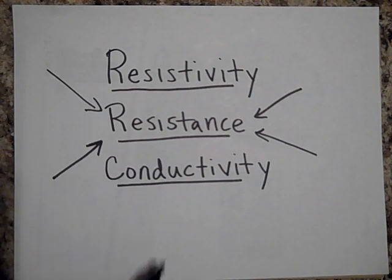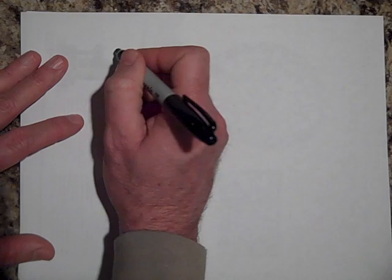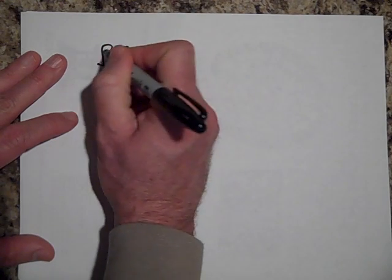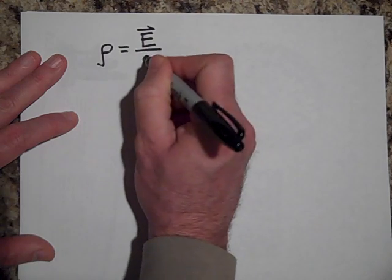Okay, so I want to talk to you about resistance here. You worked with resistance a little bit last year, enough to know that it's measured in ohms. So let's take a look at resistance. You know resistivity is the electric field per current density.